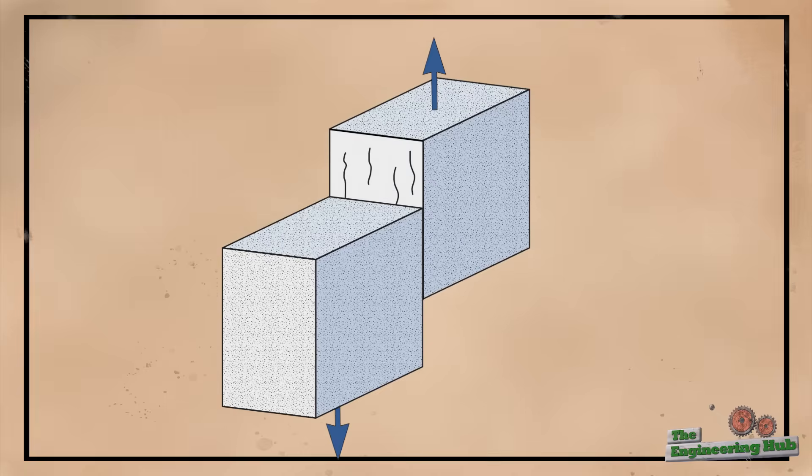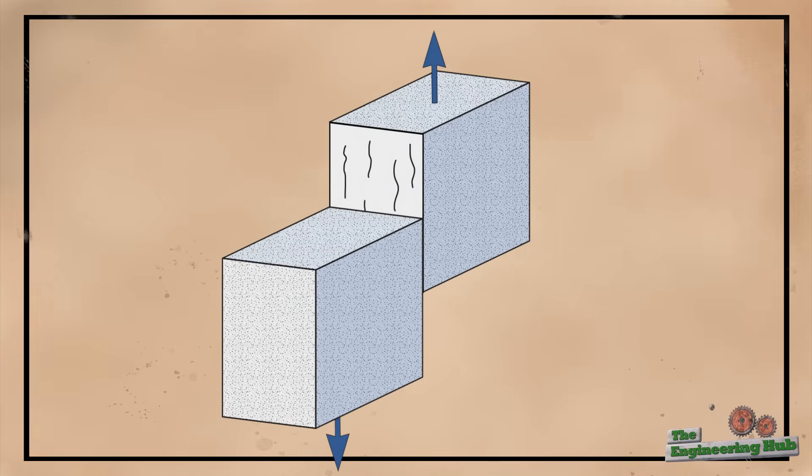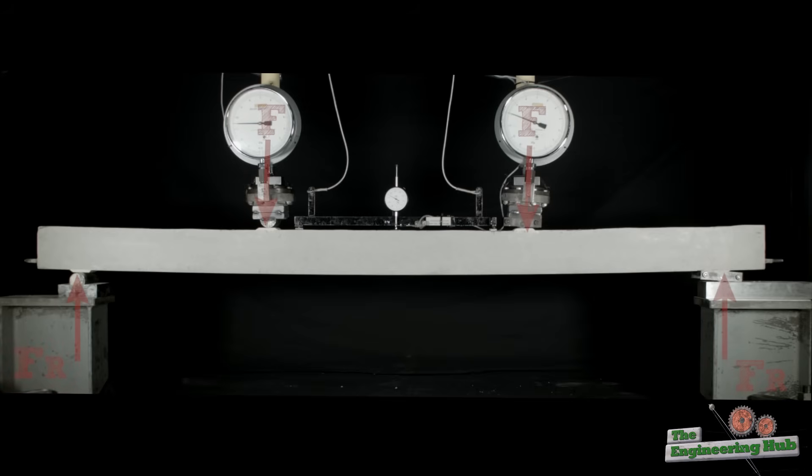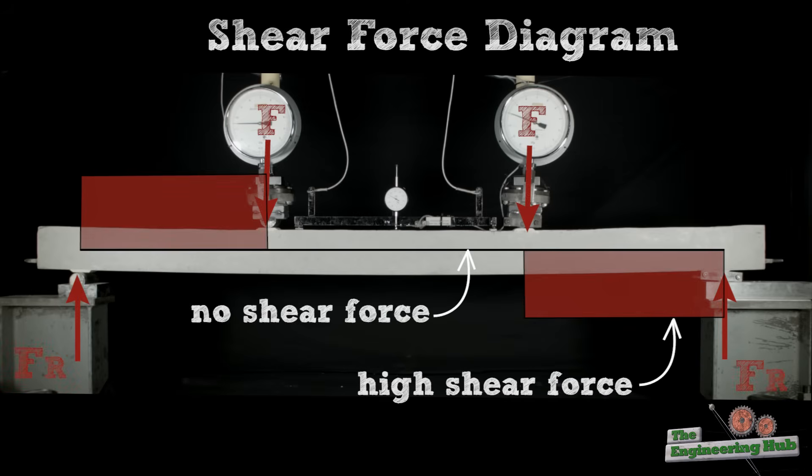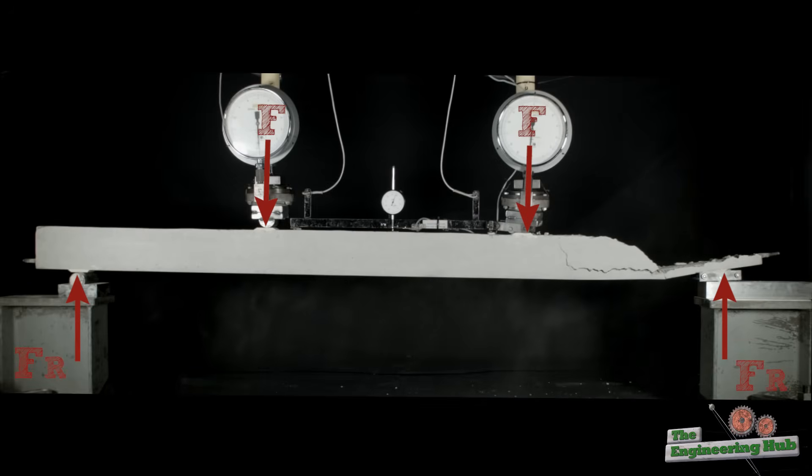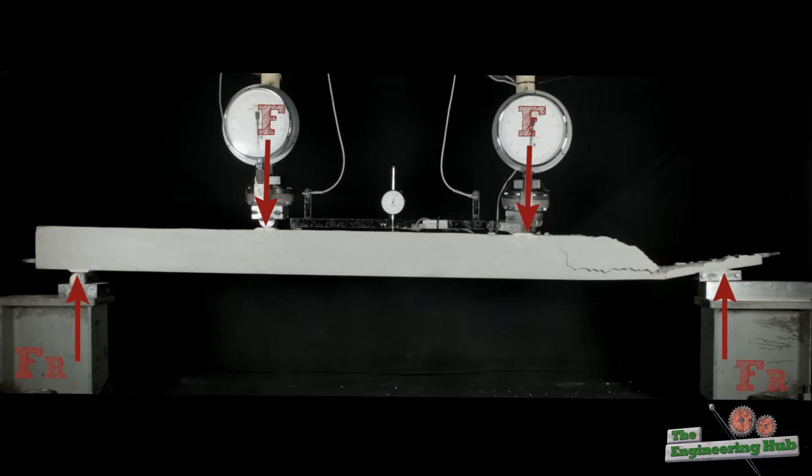For simple beams, shearing forces are the highest near the supports, due to the high forces exerted from the support, while zero at the mid-span of the beam. These forces are very destructive and usually cause sudden and brittle failure of the beam.